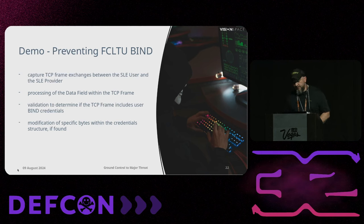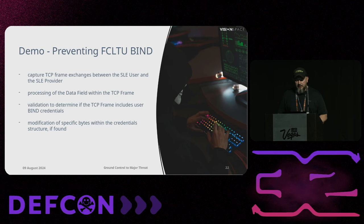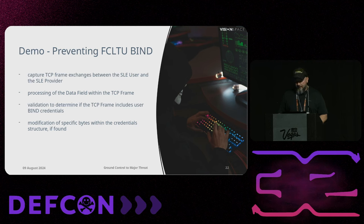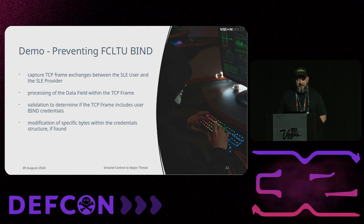The first thing we can do is cause denial of service by preventing users from authenticating to the ground station. This is an annoying way to disrupt the user because when authentication fails, the SLE provider simply drops the connection with no feedback whatsoever. Users don't know why the connection failed — only the ground station knows. We grab the bind operation, which has a very well-defined structure, and when monitoring the wire you can easily find patterns.